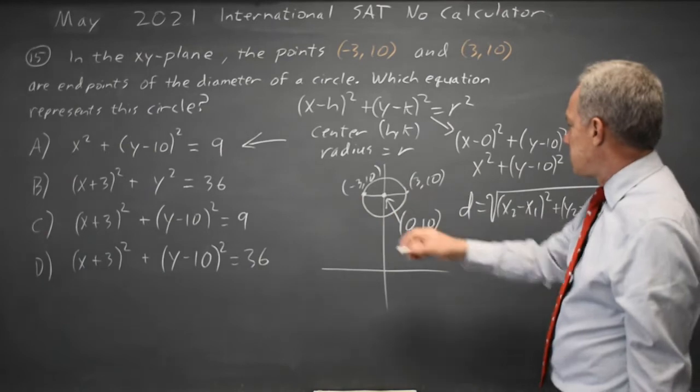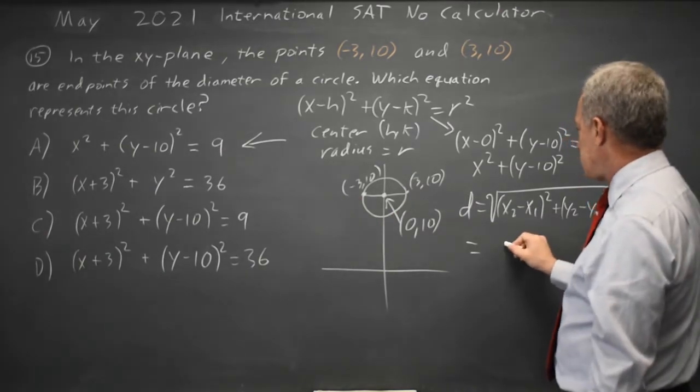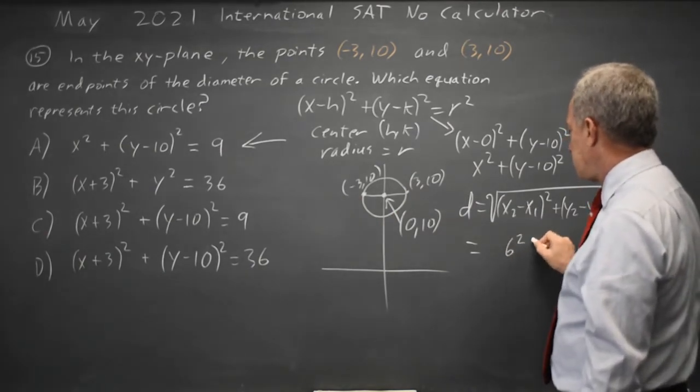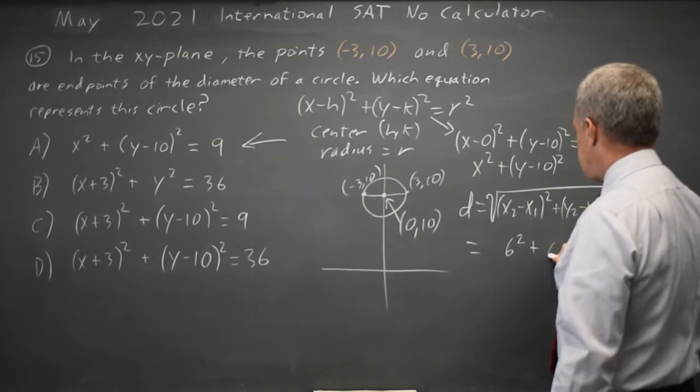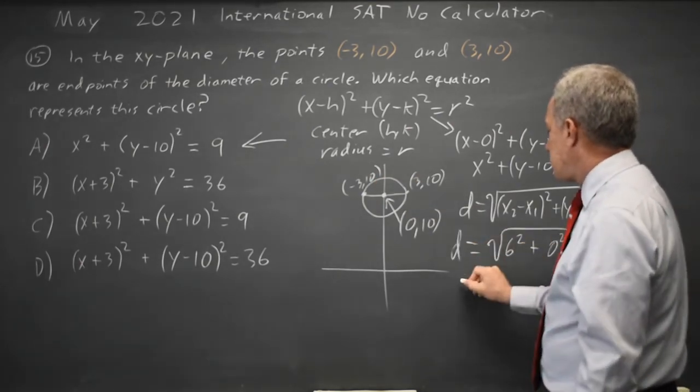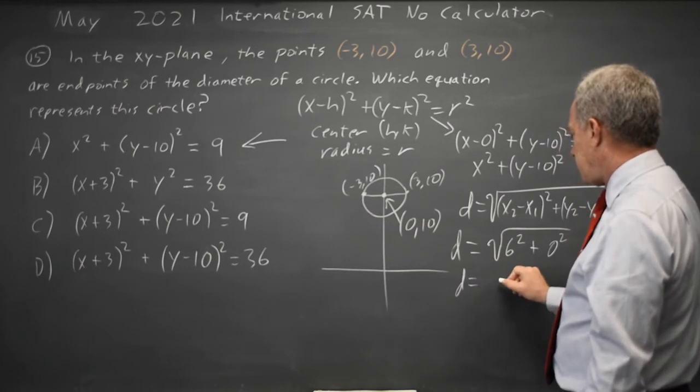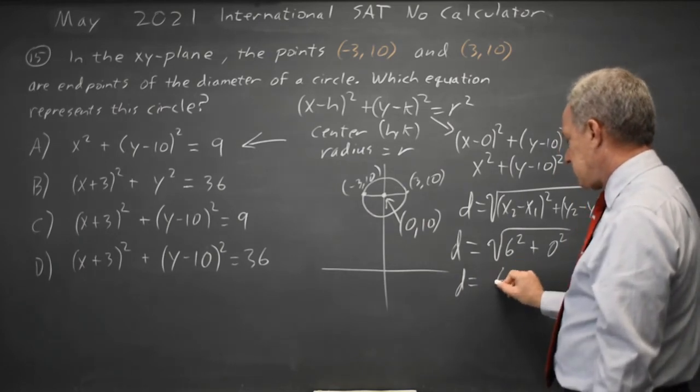So that's 3 minus negative 3 is 6 squared. 10 minus 10 is 0, and we square that and square root it. So the distance of the diameter is the square root of 36, which is 6.